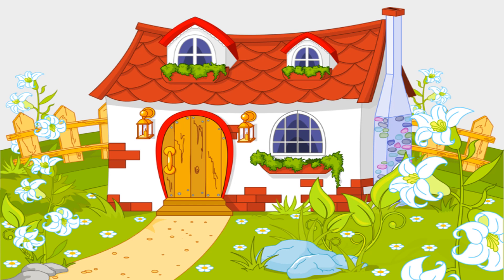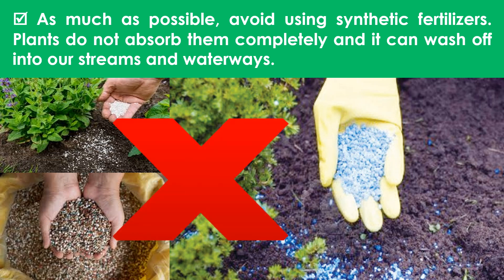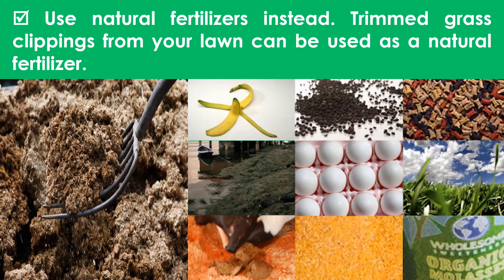Here are some ways that you can do at home. As much as possible, avoid using synthetic fertilizers. Plants do not absorb them completely, and they can wash off into our streams and waterways. Use natural fertilizers instead. Grass clippings from your lawn can be used as a natural fertilizer.